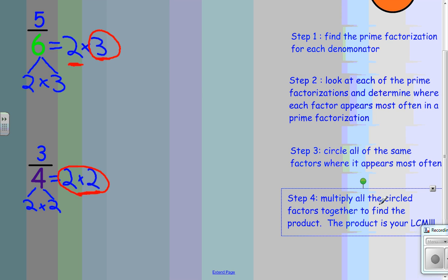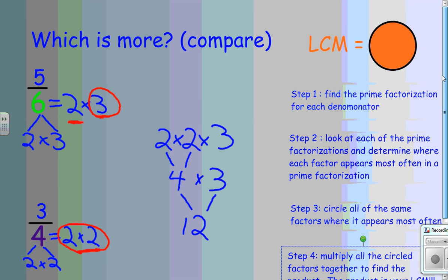So, I take two times two times three. This is four, and four times three, then, is equal to twelve. Let's double-check and see if this is, in fact, the least common multiple. And that is correct.